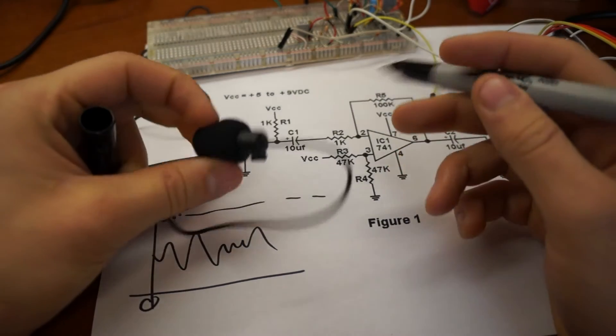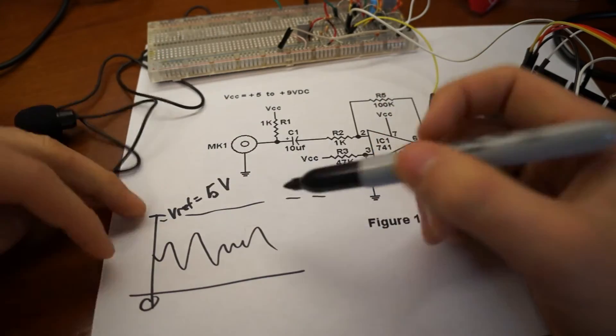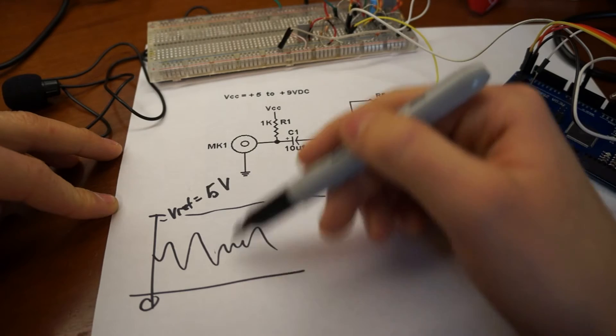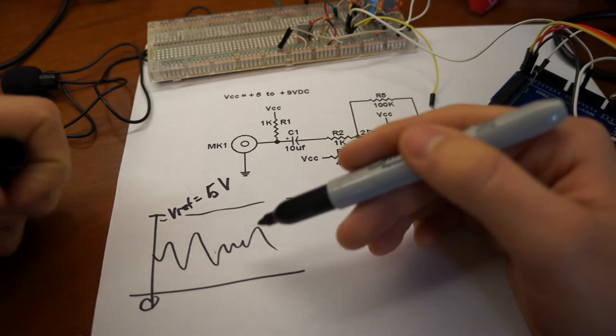And so what we're going to do is amplify the signal. So it goes from something on the order of millivolts to the full range, ideally, the zero to five volts.